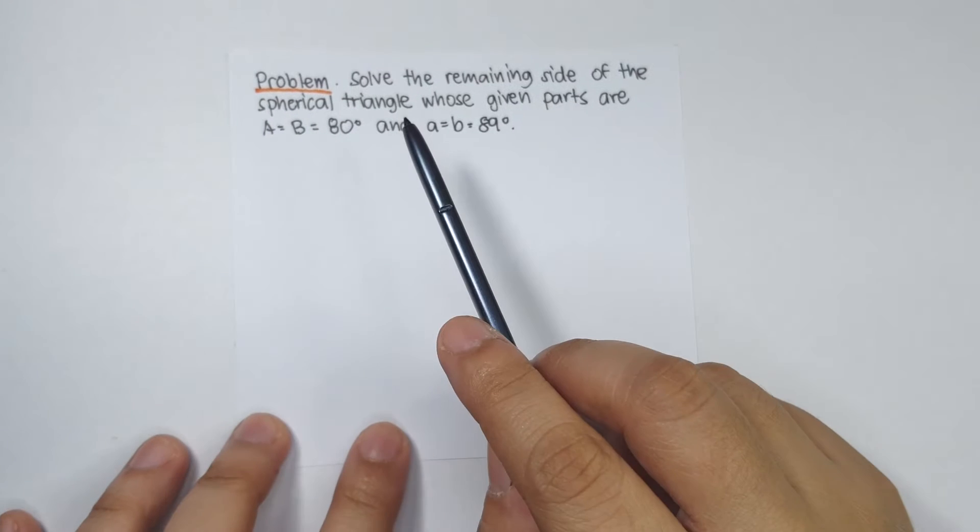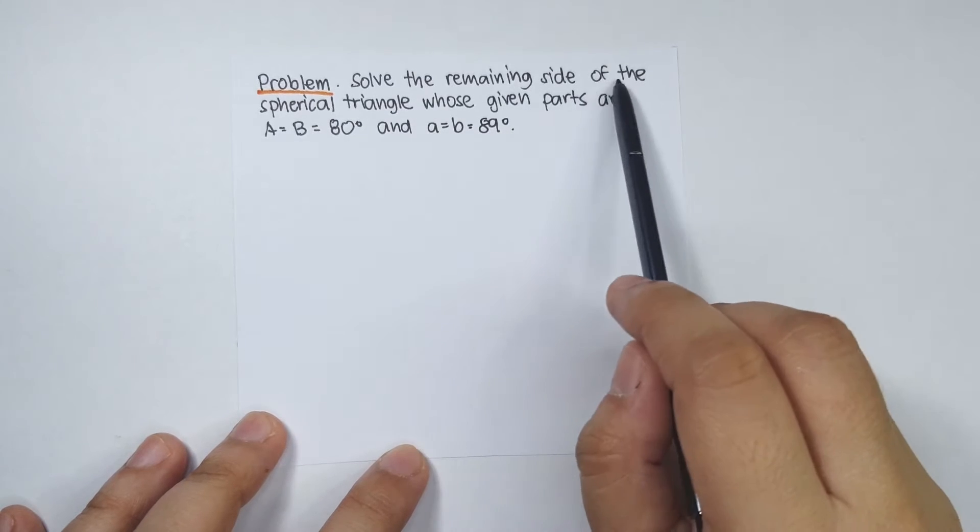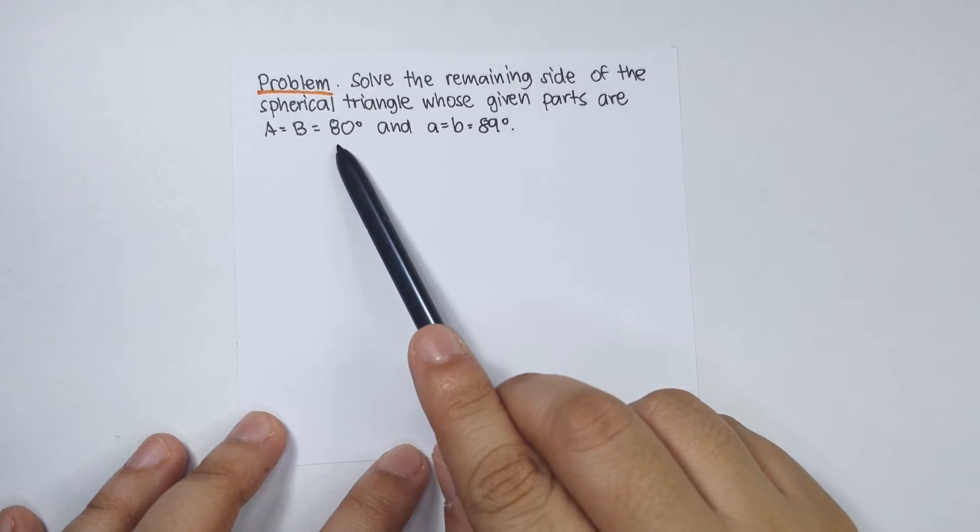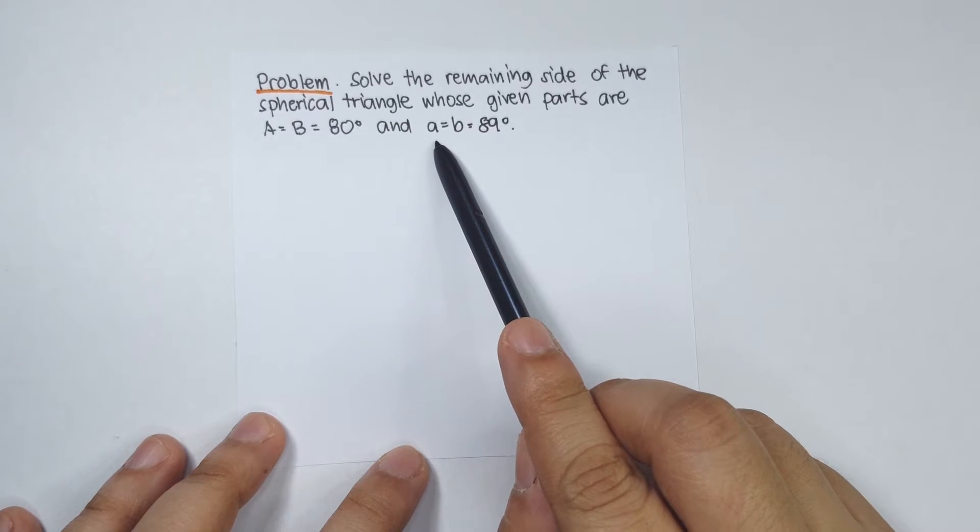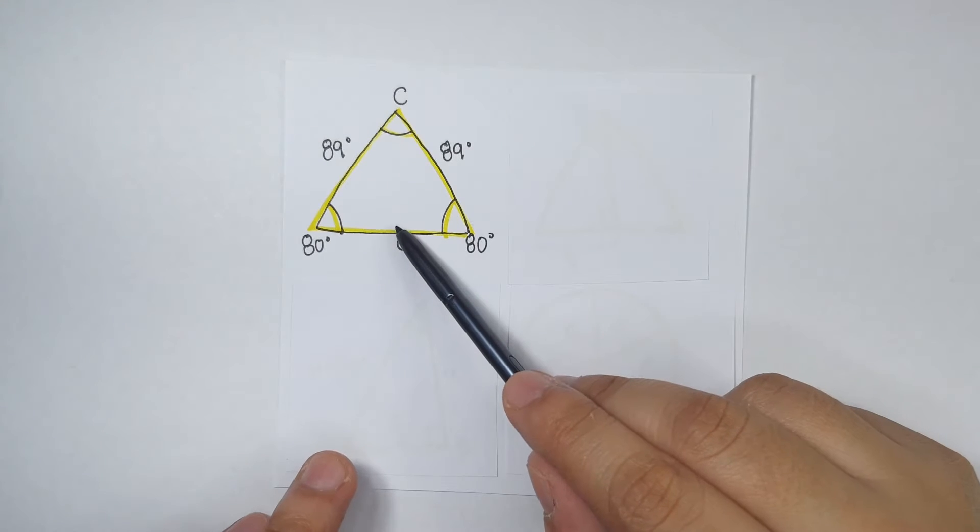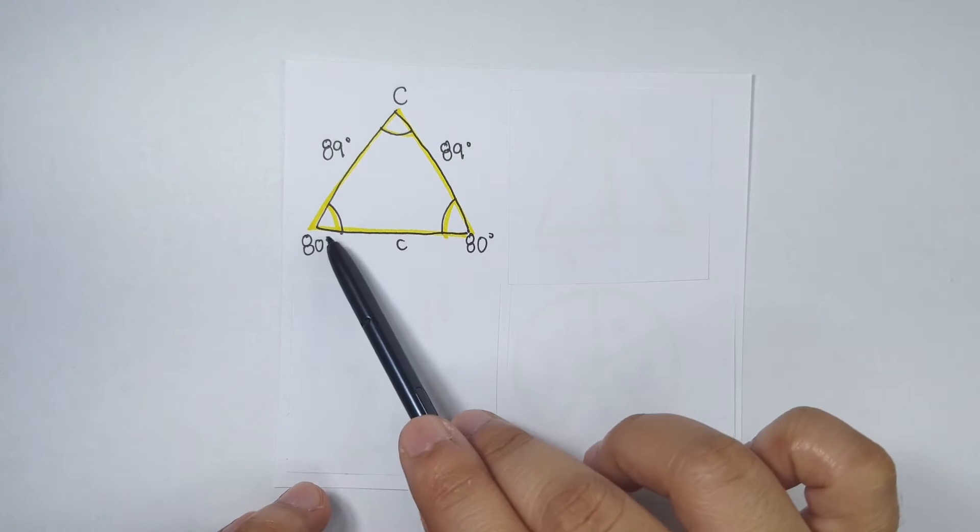So, for example, we have this problem. Solve the remaining side of the spherical triangle whose given parts are angles A and B are 80 degrees and sides a and b is equal to 89 degrees. If this is our triangle, this is 89, 89, 80, and 80.